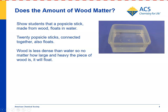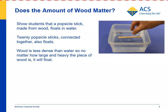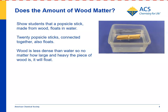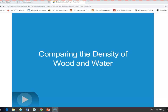In the lesson, you can demonstrate that wood is less dense than water by placing a popsicle stick in water. Kids will see that the popsicle stick floats. Then you can ask: how about if I put a whole bunch of popsicle sticks in? Here's 20 sticks, and that also floats. The reason is that the density of wood is less than the density of water, and therefore wood floats.